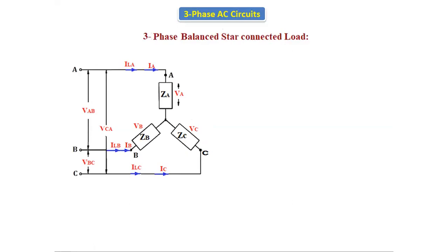That's why ZA, ZB, ZC are equal in magnitude. If we take the phase voltages — VA is the phase A voltage, VB is the phase B voltage, and VC is the phase C voltage. All the phase voltages are equal in magnitude because it is a balanced star connected load. As it is a balanced star connected load, each and every parameter — line voltage, phase voltage — all are equal in magnitude. VA, VB, VC are the phase voltages.